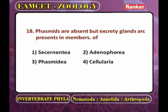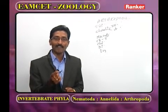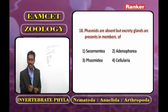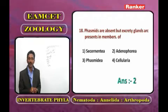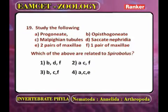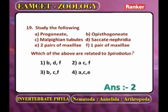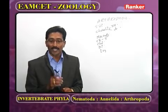Phasmids are absent but excretory glands are present in the members of: the answer is Adenophorea, which is the other name for Aphasmida. In Aphasmida, phasmids are absent. The question on characters of Spirobolus: progoniata, Malpighian tubules (saccate nephridia), two pairs of maxillae — the answer is the second option. Spirobolus comes under Diplopoda; in Diplopoda the genital pore is anterior (progoniata) and excretion is by Malpighian tubules, with one pair of maxillae.